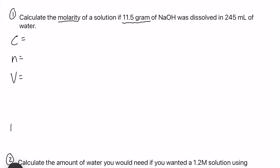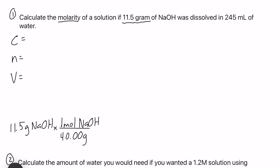My first order of business is to convert 11.5 grams of NaOH to moles of NaOH. We have 11.5 grams of sodium hydroxide and we need the molar mass. You can pause and calculate it, or I'll give it now: one mole of NaOH equals 40.00 grams of NaOH. So 11.5 divided by 40.00 gives us 0.2875 moles of NaOH.